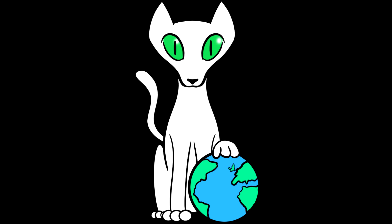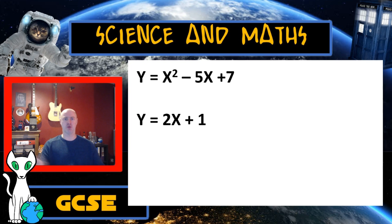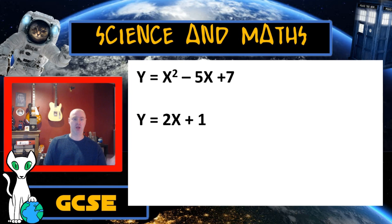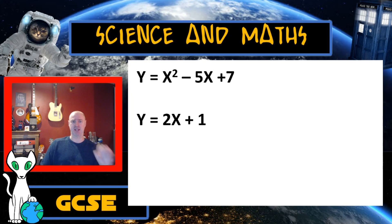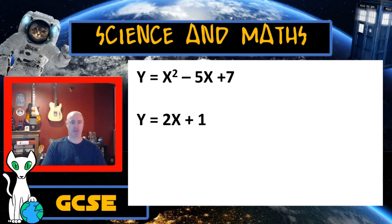Let's get on to the main event: a simultaneous equation with one linear and one quadratic. Instantly by looking at this, it seems far more difficult — the top equation has a squared value in it, making it a quadratic. Using the method we've used for the simpler simultaneous equations isn't going to work; I can't multiply the bottom equation to fit the top. I've got to use a different technique, which starts by making sure both expressions have been arranged so they are equal to y.